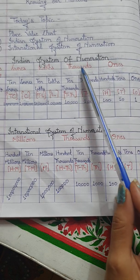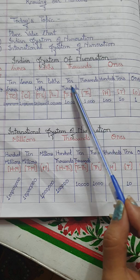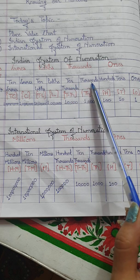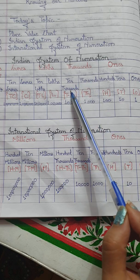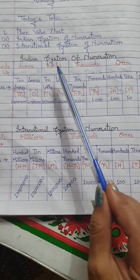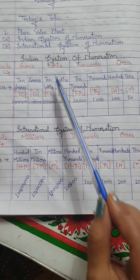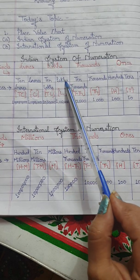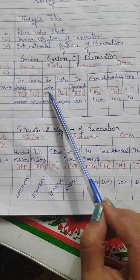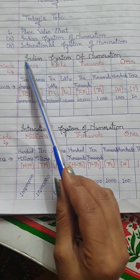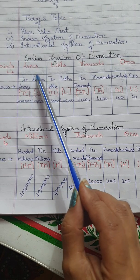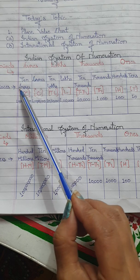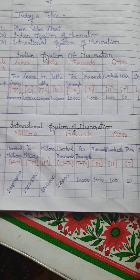The thousands period is further divided into 2 places: thousands and ten thousands. The lakhs period is divided into 2 places: lakhs and ten lakhs. Finally, the crores period is also subdivided into 2 places: crores and ten crores.